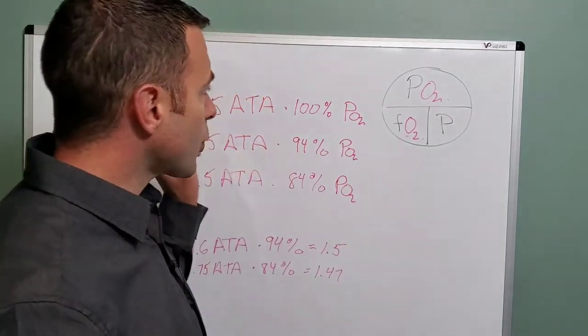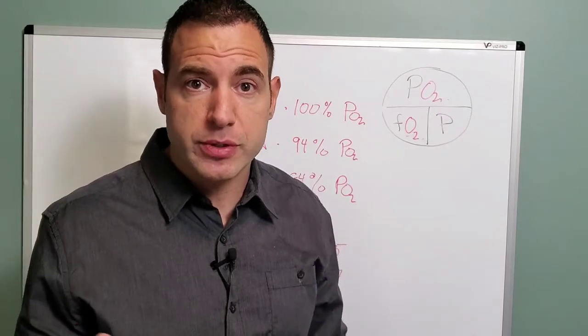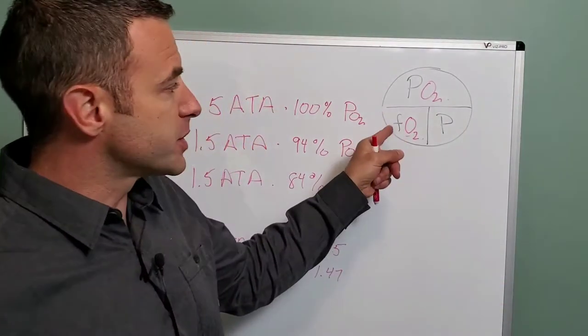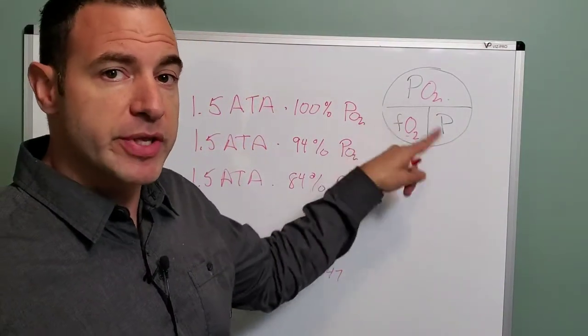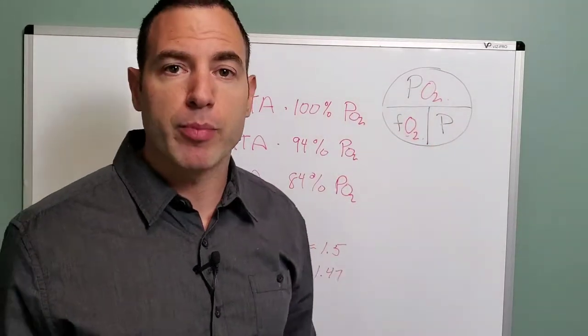Okay, so we went over this already. PO2, the pressure of the oxygen, the dose, the gradient, is a measure of a fraction, the percentage of gas that is oxygen, times the pressure that we're putting the gas to.